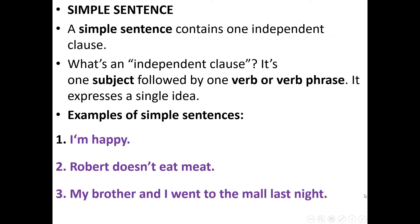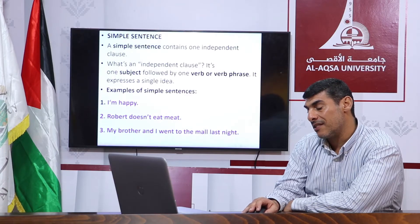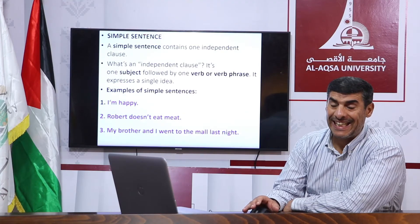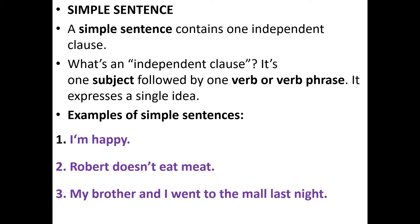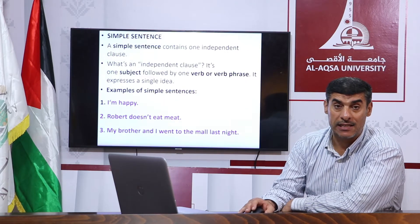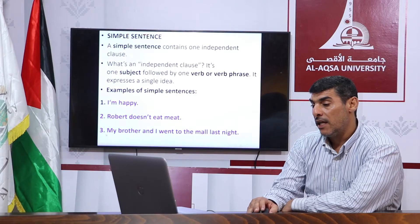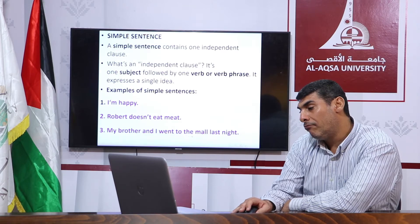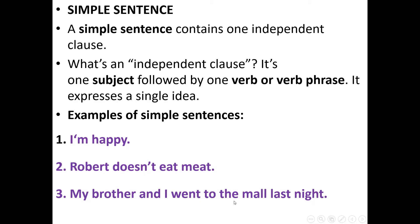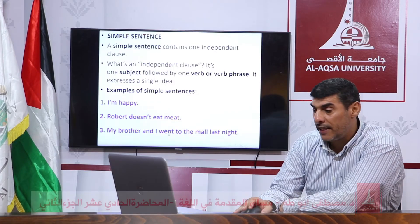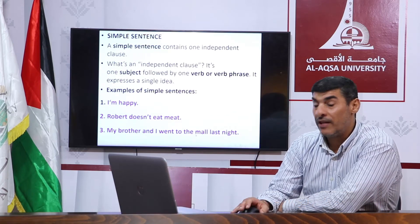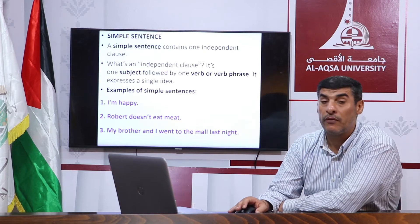Number two: Robert doesn't eat meat. Look at the verb — 'doesn't eat' — that is a transitive verb, which means it must take or have an object. So 'meat' is the object of the sentence. Consider sentence number one: we have a noun phrase as the subject, 'am' as the verb phrase which is a linking verb, and 'happy' is an adjective phrase functioning as a complement of subject. Number three: my brother and I went to the mall last night. 'My brother and I' is the subject. 'Went' is the verb, 'to the mall' is a verb phrase functioning as an object, and 'last night' is a noun phrase functioning as an adverb.